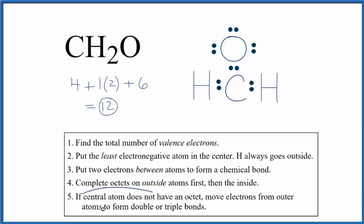What we can do is if the central atom does not have an octet, we're going to move some electrons to form a double or a triple bond. So let's move these here to the center. That forms our double bond.